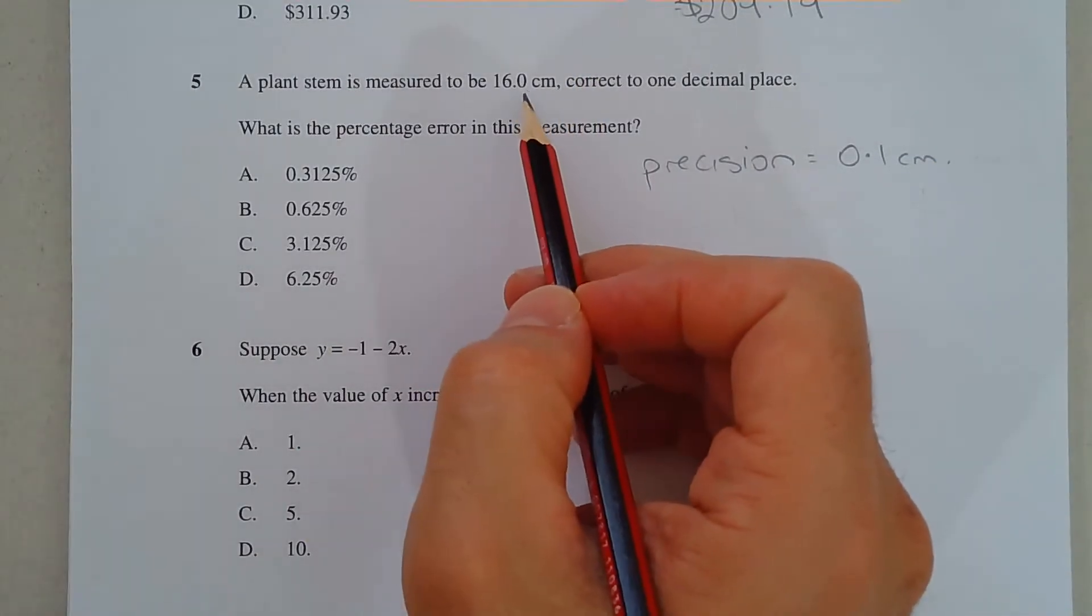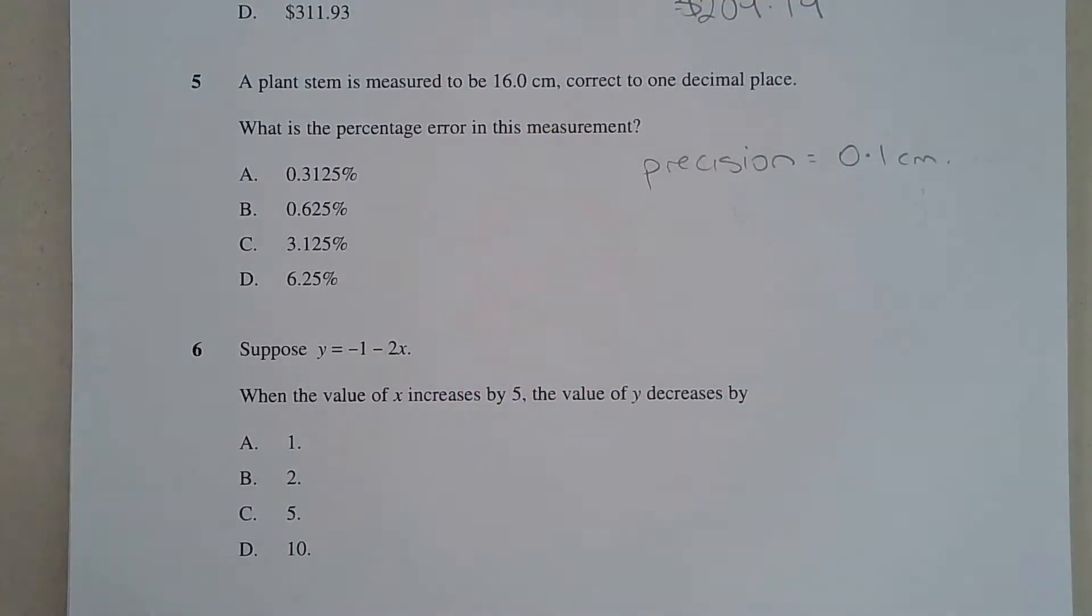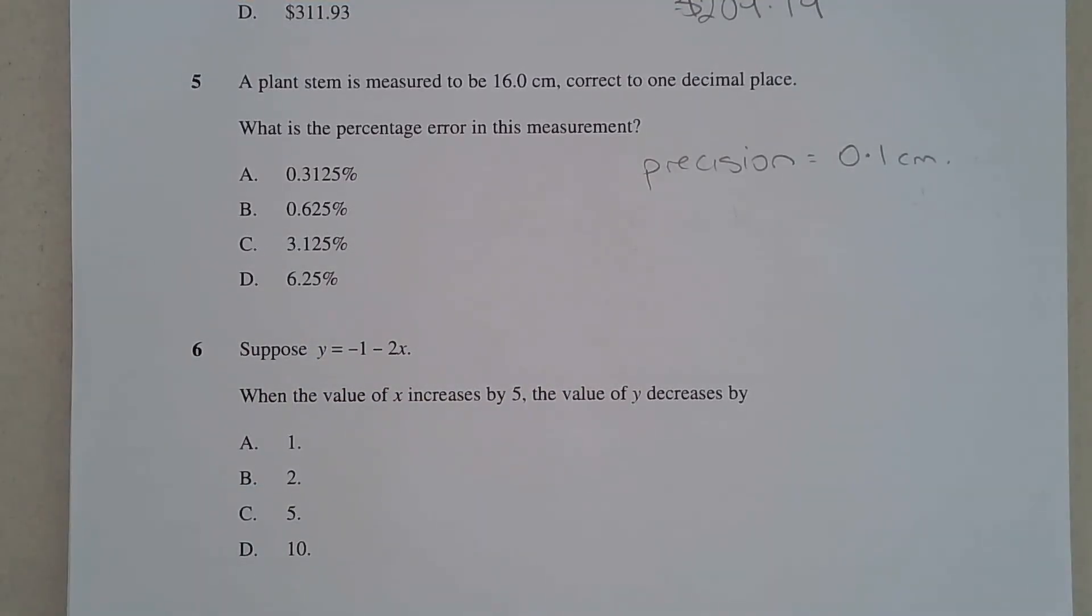That comes from the fact that it's one decimal place. The next measurement up from 16.0 is 16.1, then 16.2. So that gives you an indication of how precise the measurement is.